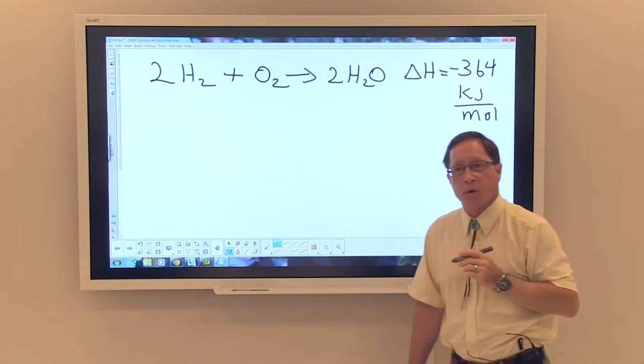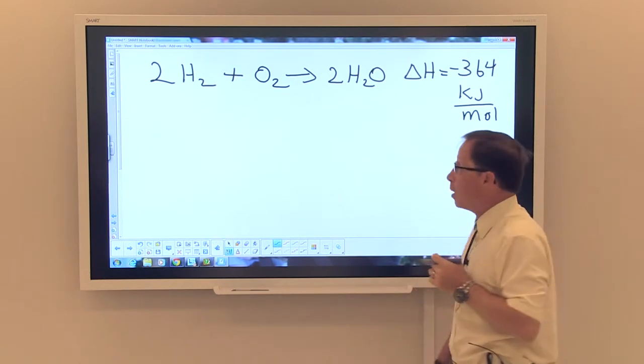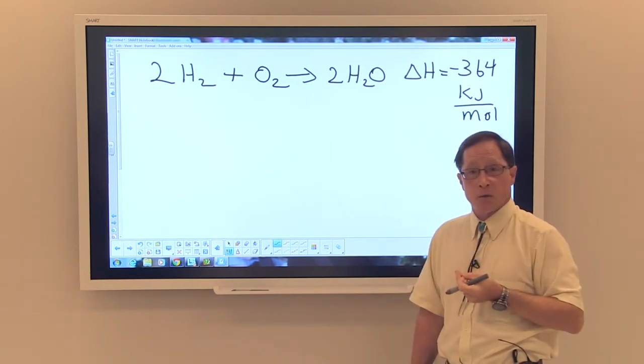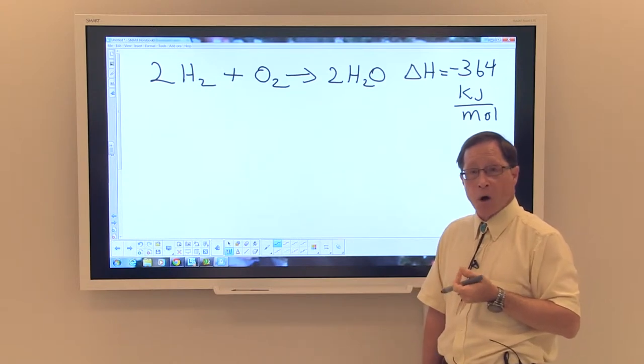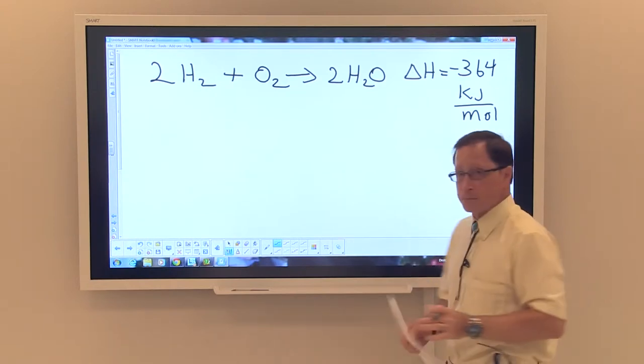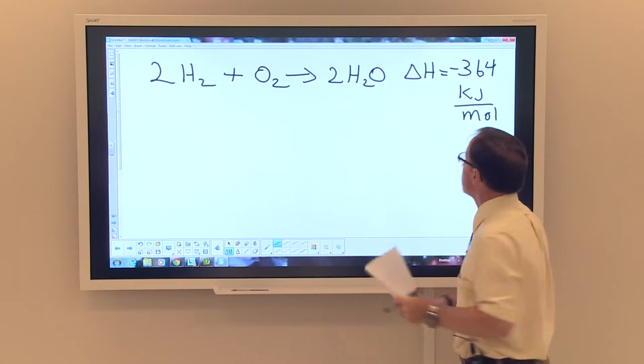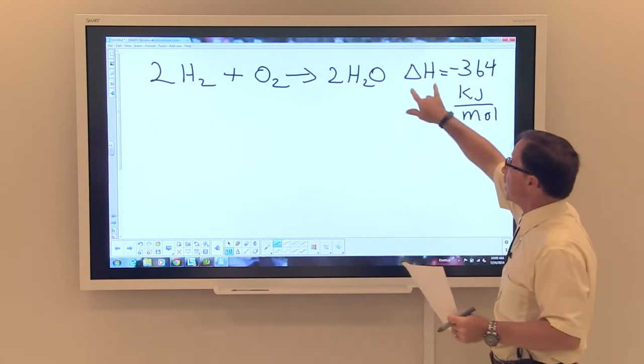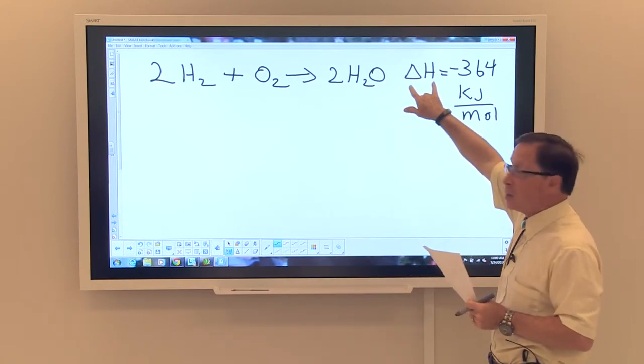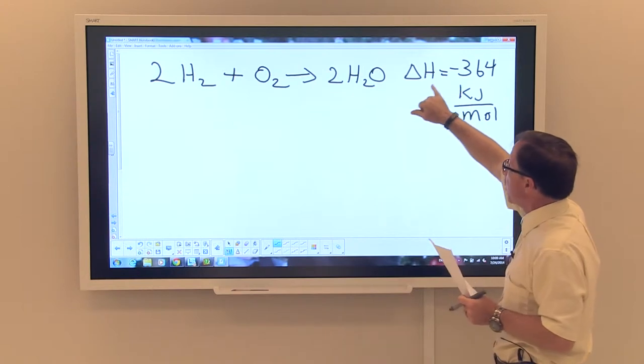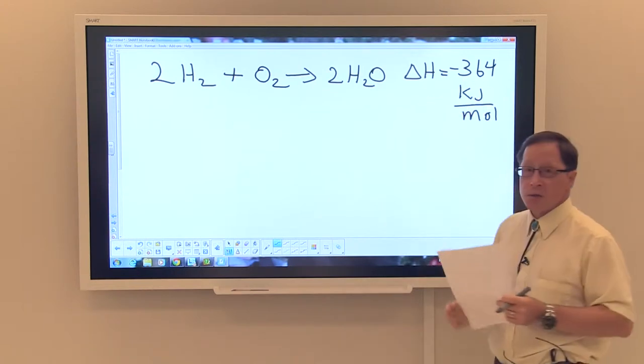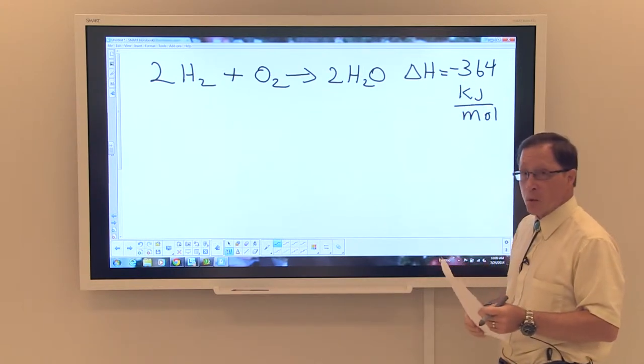If we look at this chemical reaction, which is the reaction or combustion of hydrogen with oxygen to form water, we see that our delta H, which is our energy that's given off for this reaction, is a negative 364 kilojoules per mole.